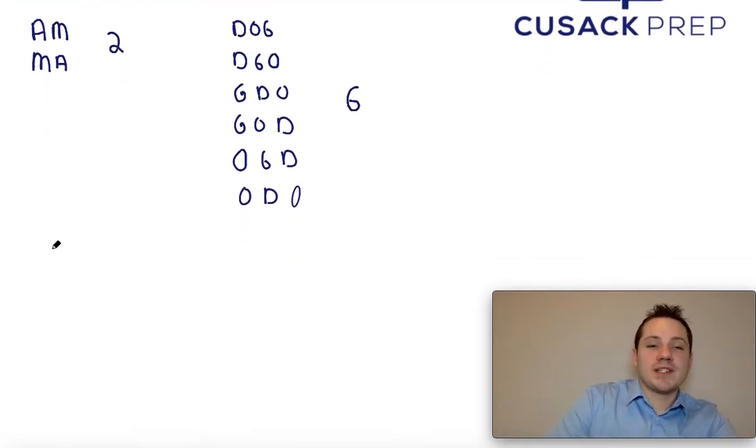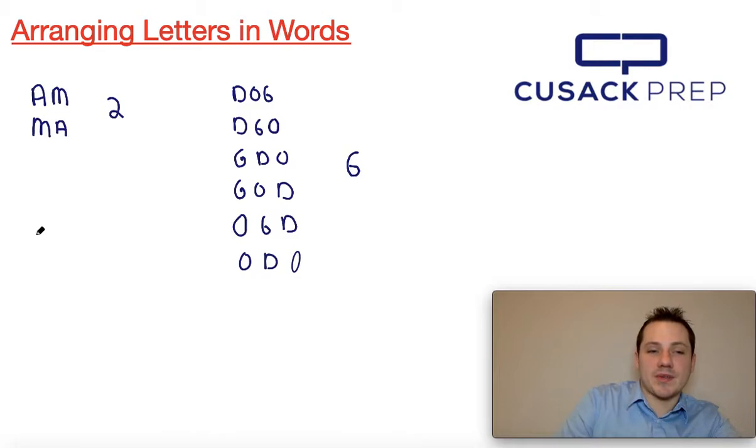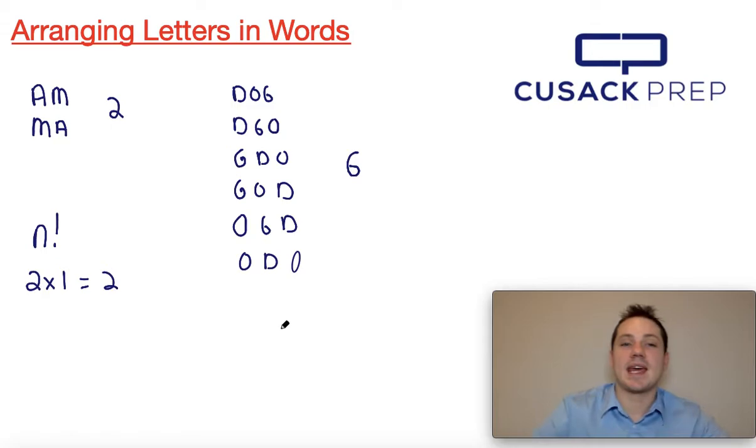So what you want to do when none of the letters repeat is just use N factorial, where N represents the number of letters of the word. So for a word like AM, you can see that there are two letters. So N factorial would be two factorial, which is just two times one, and that would give us two.